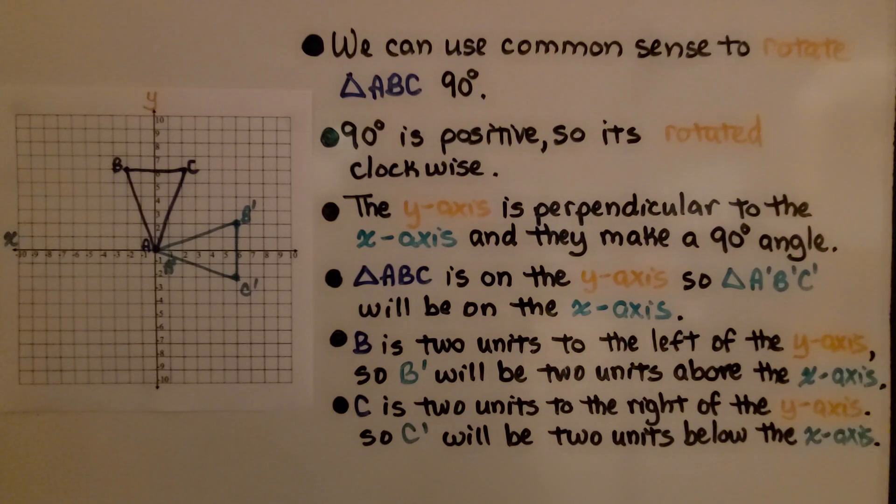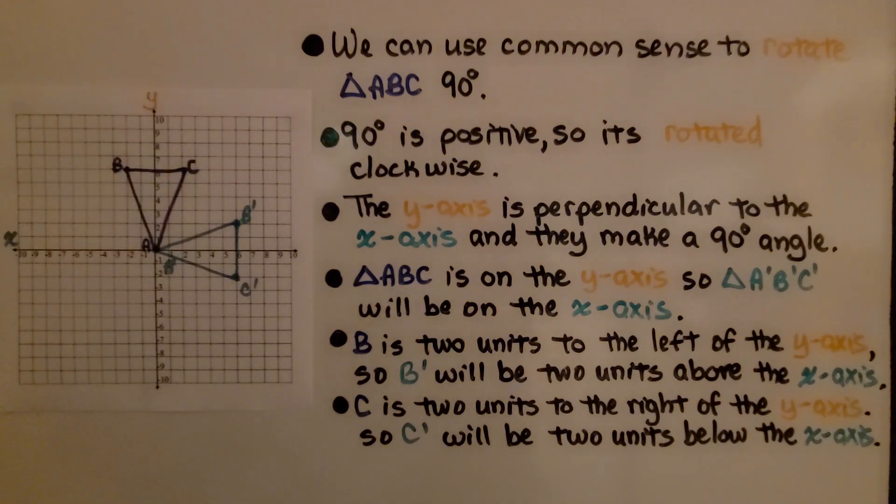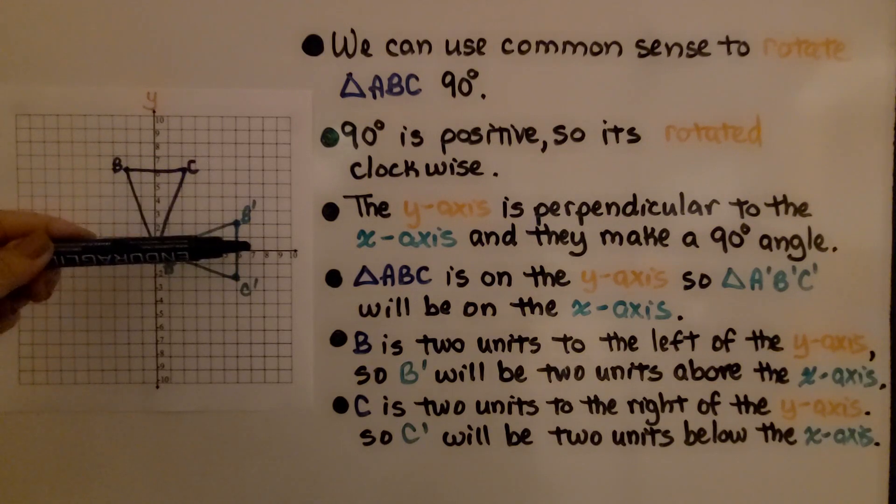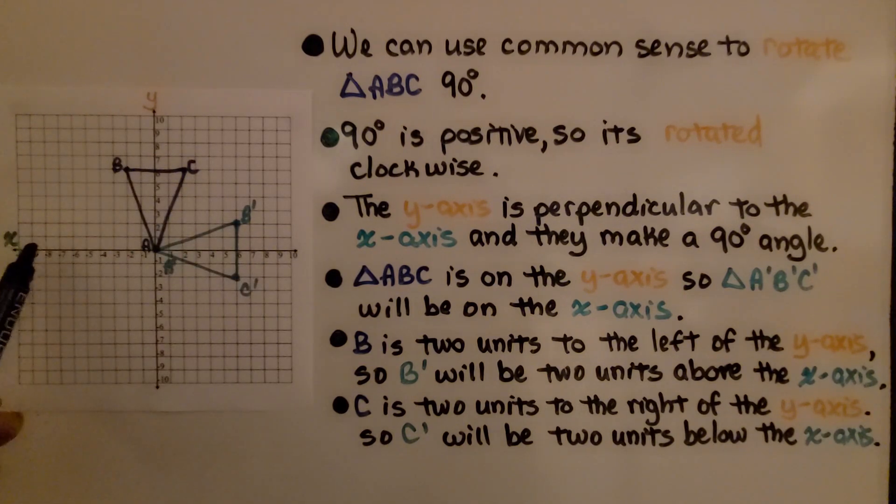We can use common sense to rotate triangle ABC 90 degrees. 90 degrees is positive, so it's rotated clockwise. The y-axis is perpendicular to the x-axis, and they make a 90-degree angle.